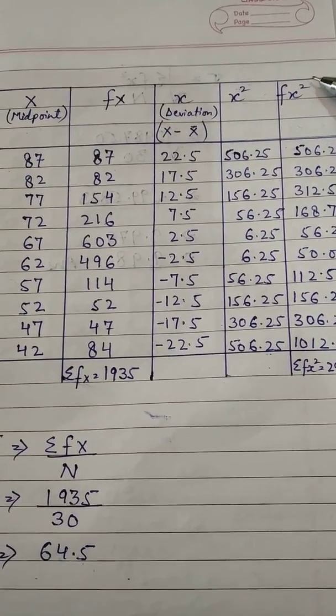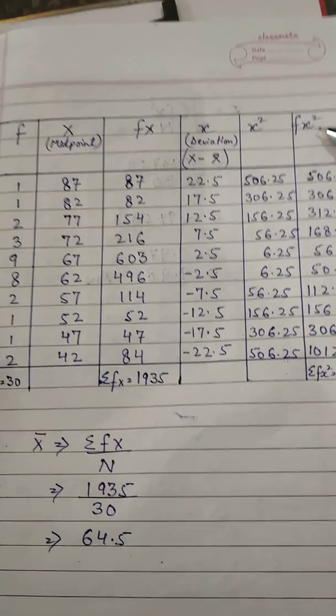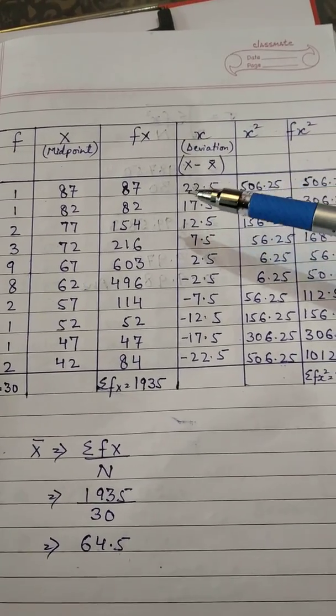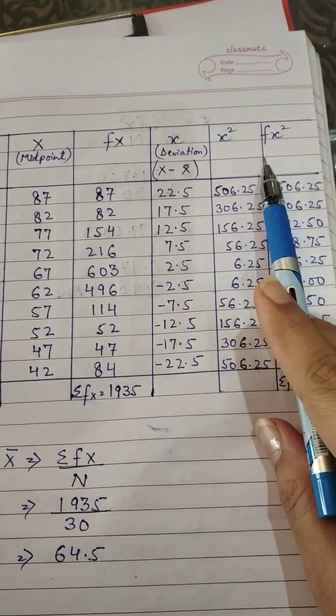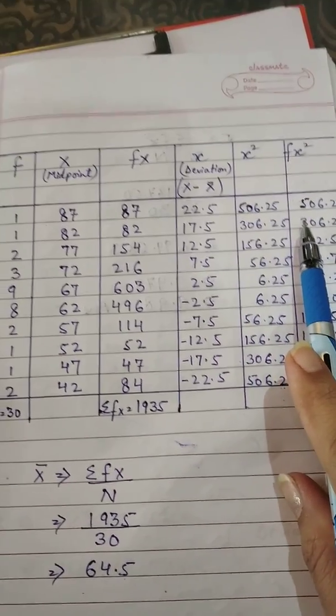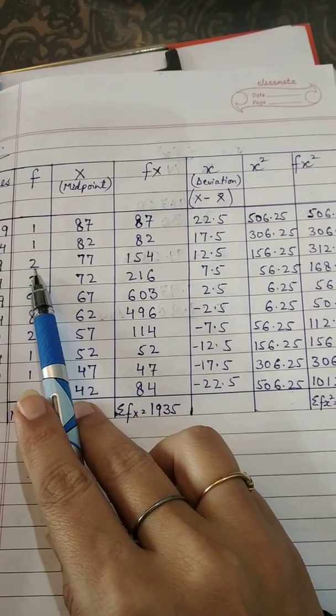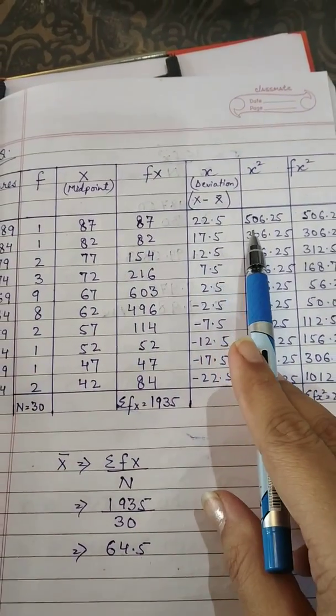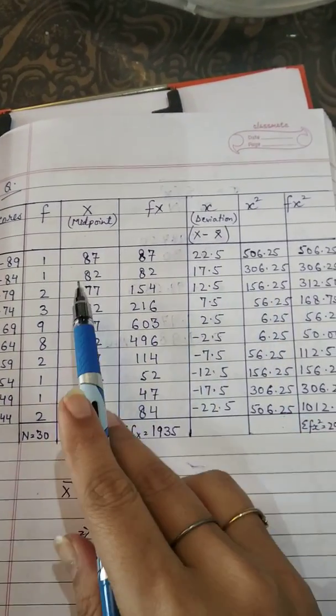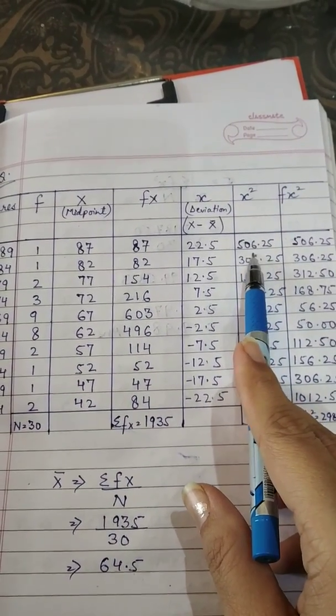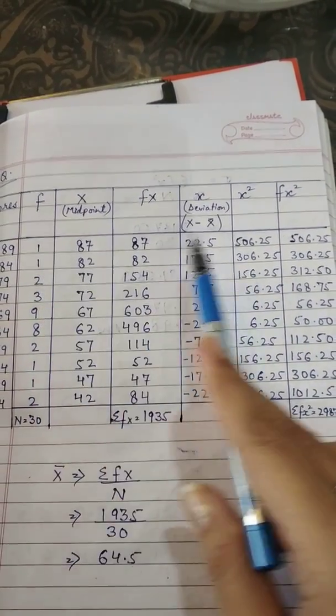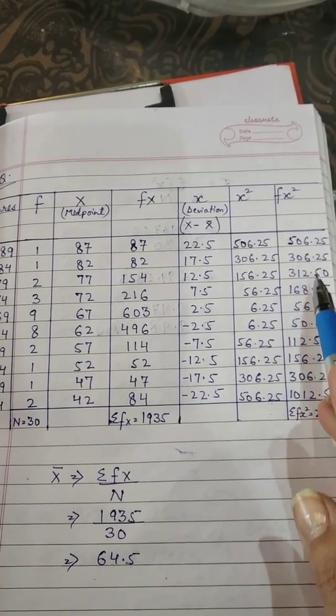Next, you will calculate fx square. Aapka yeh fx square joh hai, yeh wala joh portion hai. Toh yeh aagya hai f aapka. Aapka x square. Dekhiye, this is f and this is x square. Toh aap iska multiplication isse karenghe. And you will calculate this particular thing.